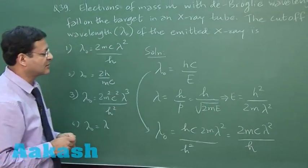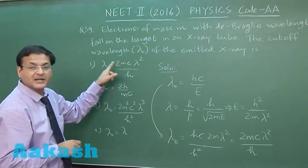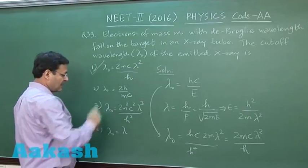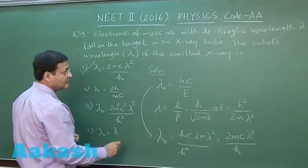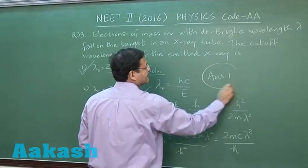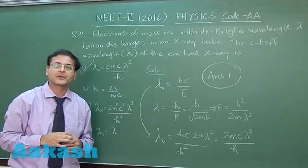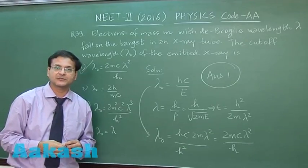So ultimately it comes out to be 2 m c lambda square upon h. You have to look for this kind of expression 2 m c lambda square by h. You can see this is the first option which is matching your requirement. So I will be marking answer 1, so answer 1 will be the correct answer for question number 39. Now let us switch over to next question, that is question 40.